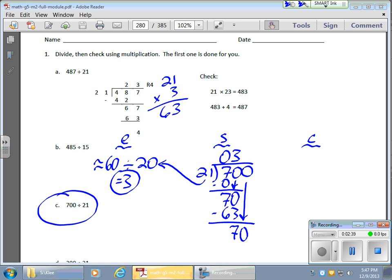Bring down a 0. Here's my 70 again. That's going to go 3 times again. 63. 7 left. And there's my remainder.